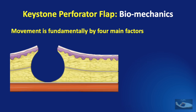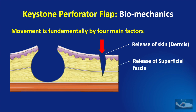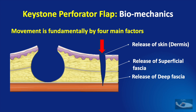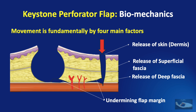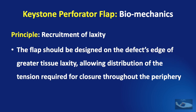The movement of the keystone perforator islanded flap is governed by four main factors. First, the skin incision through the dermis allows the first stage of movement. If this is not enough, division of the superficial fascia allows a little more movement. Third, division of the deep fascia provides further movement. And if even this is insufficient, undermining the flap allows the final movement — but this can only be done if a hot spot of perforators has been confirmed with Doppler previously. The basic principle used is recruitment of laxity: the flap should be designed on the defect's edge of greater tissue laxity, distributing tension for closure throughout the periphery.